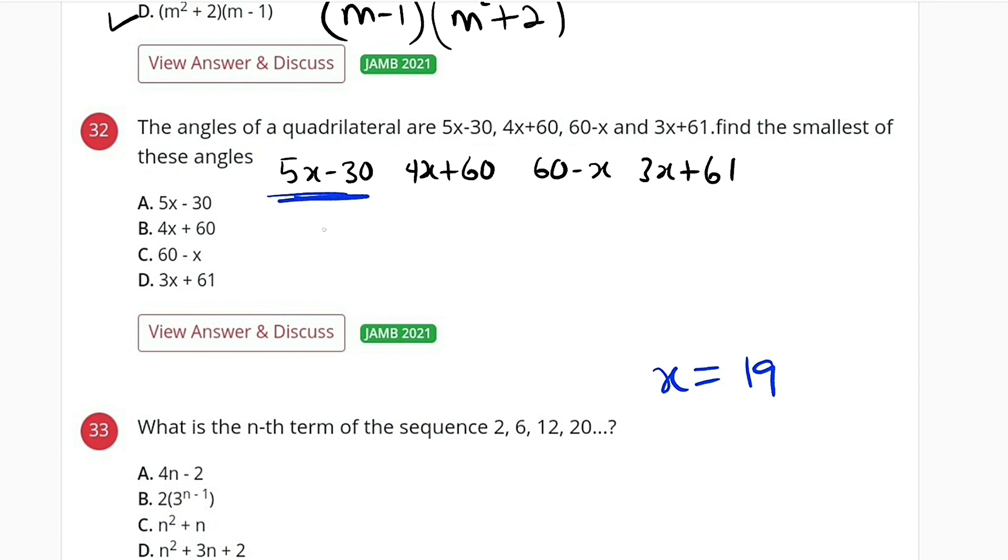The second one: 4 times 19 plus 60, that will give us 136.